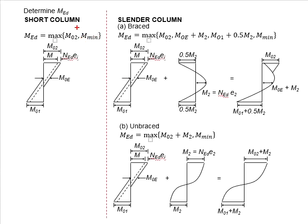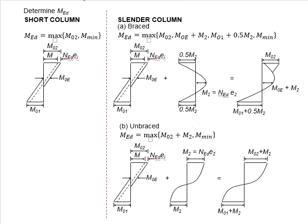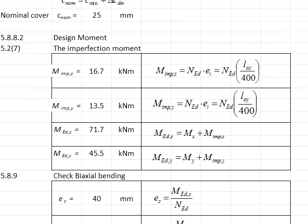At the same time, you will need to check for the Mmin, as the MEd will be the larger value of these two. The Mmin here is determined by the axial load times eccentricity e0, which is determined by h/30. The h here refers to the width or height of the column depending on the axis, and the e0 here needs to be at least greater than 20. Once you have determined the Mmin, compare with the M02 and the MEd is determined. In this case, the Mmin is less than the M02. Therefore, the MEd in the z and the y directions will be this.